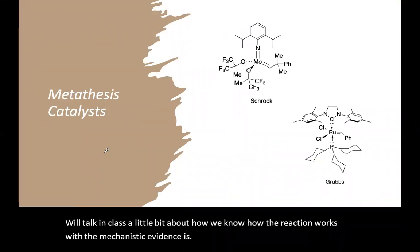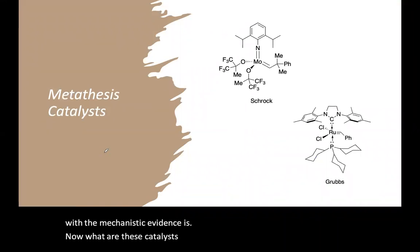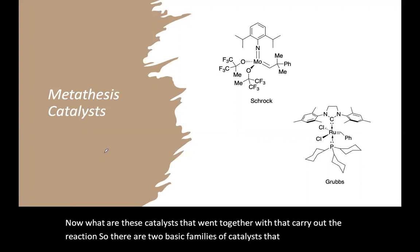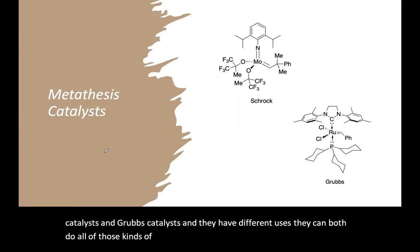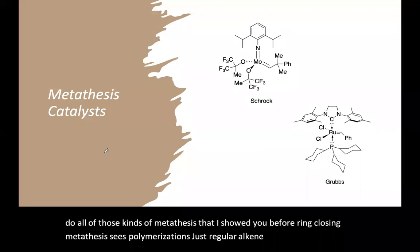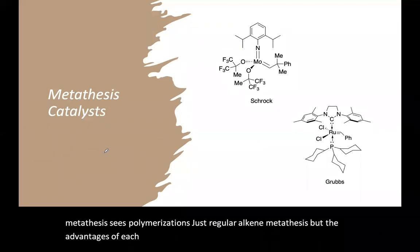Now, what are these catalysts that carry out the reaction? So there are two basic families of catalysts that are used: the Schrock catalysts and Grubbs catalysts, and they have different uses. They can both do all of those kinds of metatheses that I showed you before: ring closing metatheses, polymerizations, just regular alkene metatheses.